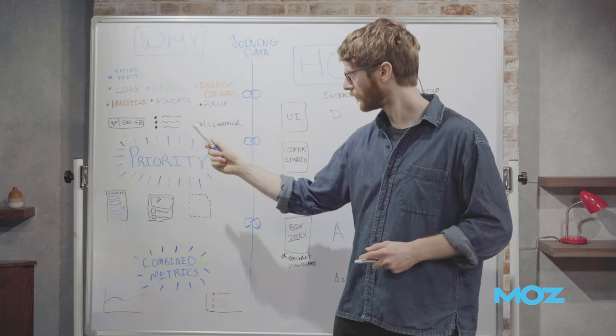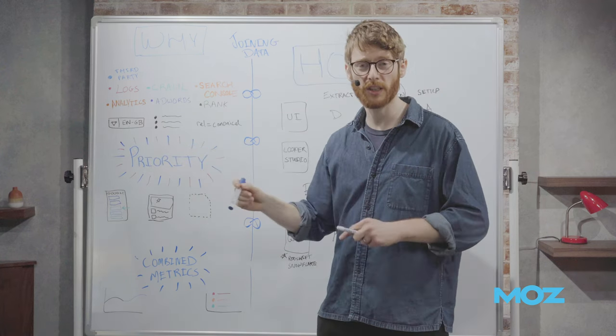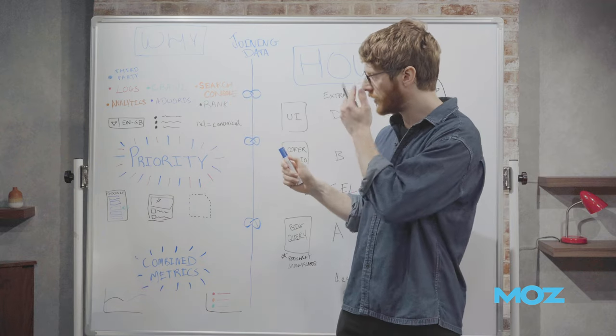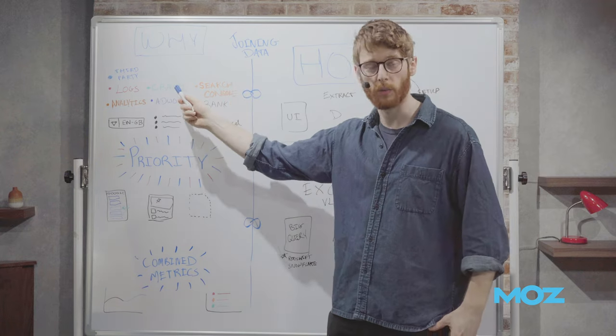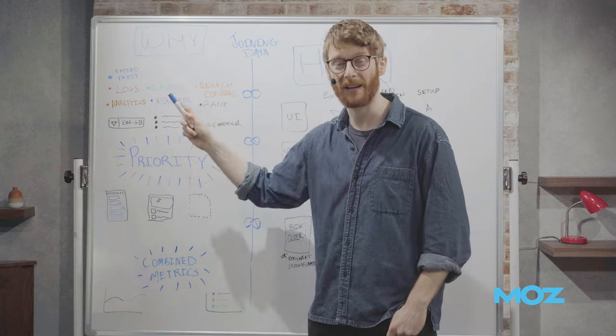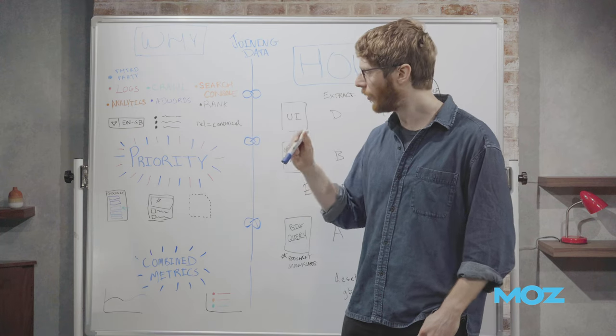Hopping on to a third example. Suppose you've got another technical problem, right? This time we've got a dropdown on our website, a language dropdown. And we're fairly certain from crawling the website that it's creating an infinite loop, it's creating an infinite number of pages.